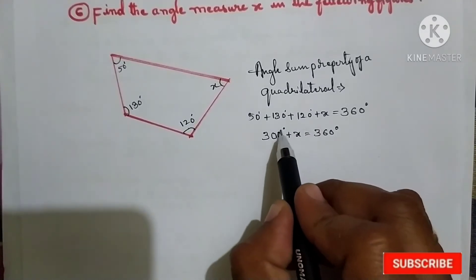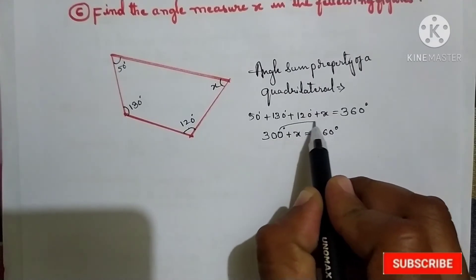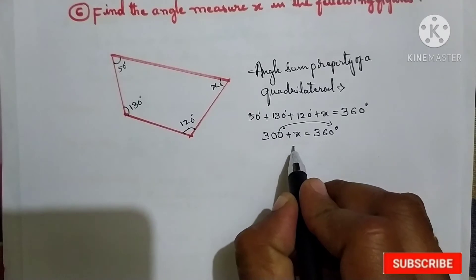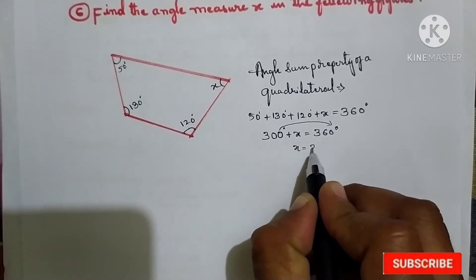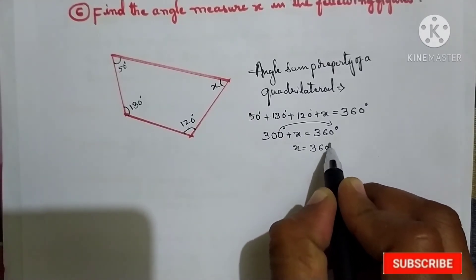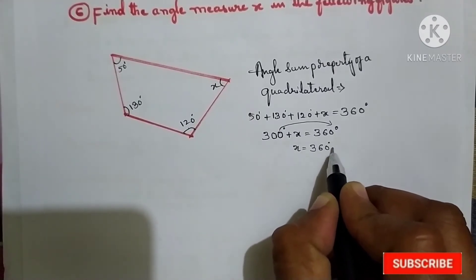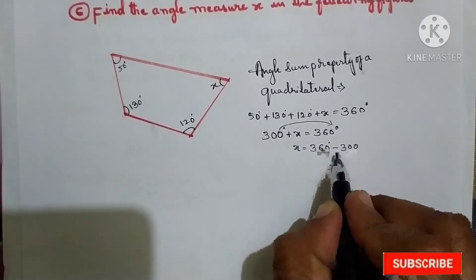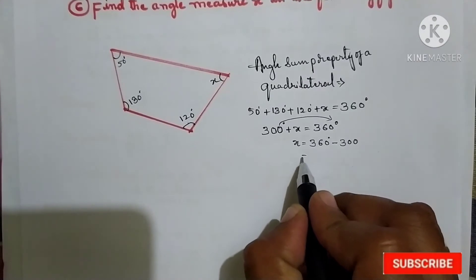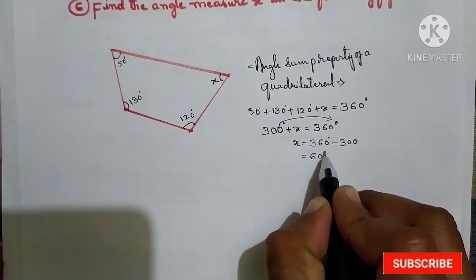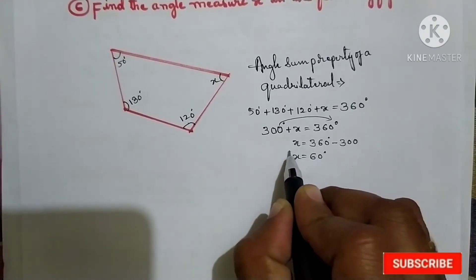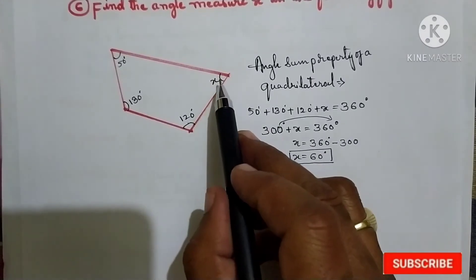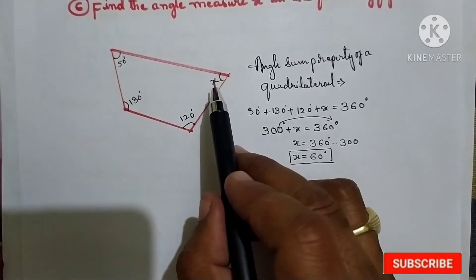Next, take 300 to the right-hand side. So x is equal to 360 degrees minus 300 degrees. Subtracting, this is equal to 60 degrees. That means here x is equal to 60, so this angle becomes 60 degrees.